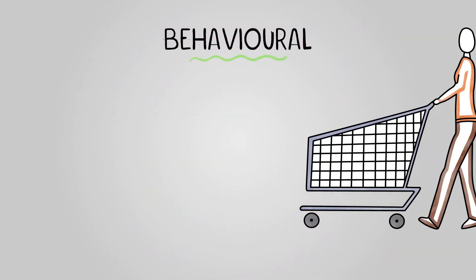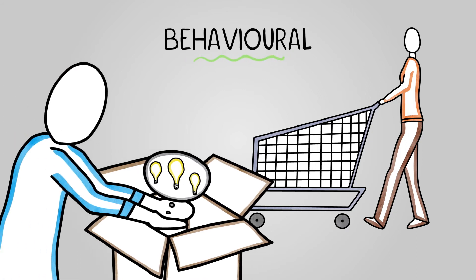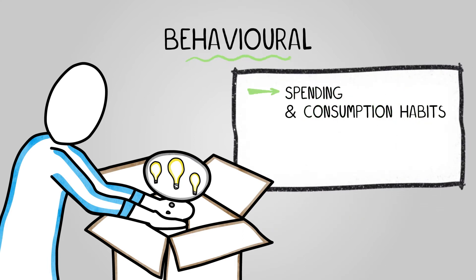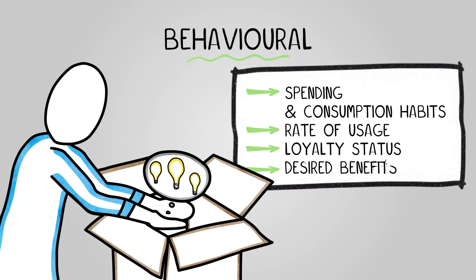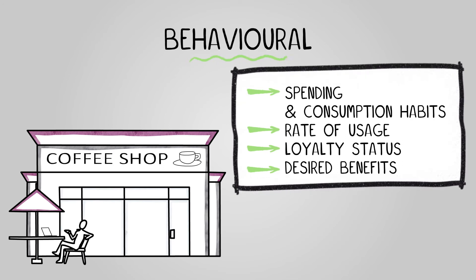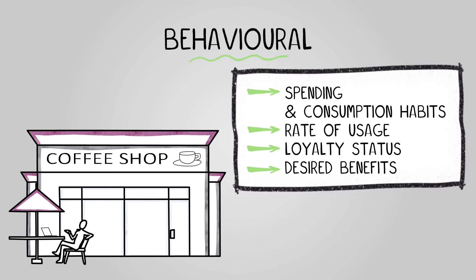Behavioral segmentation delves into customers' purchasing habits, reasons for buying, and desired product benefits. It allows businesses to segment customers based on factors like spending and consumption habits, rate of usage, loyalty status, or their desired benefits. For example, a coffee shop might segment its customers into groups for daily, weekly, and occasional customers, or segment them into espresso, drip coffee, and non-coffee drinkers.